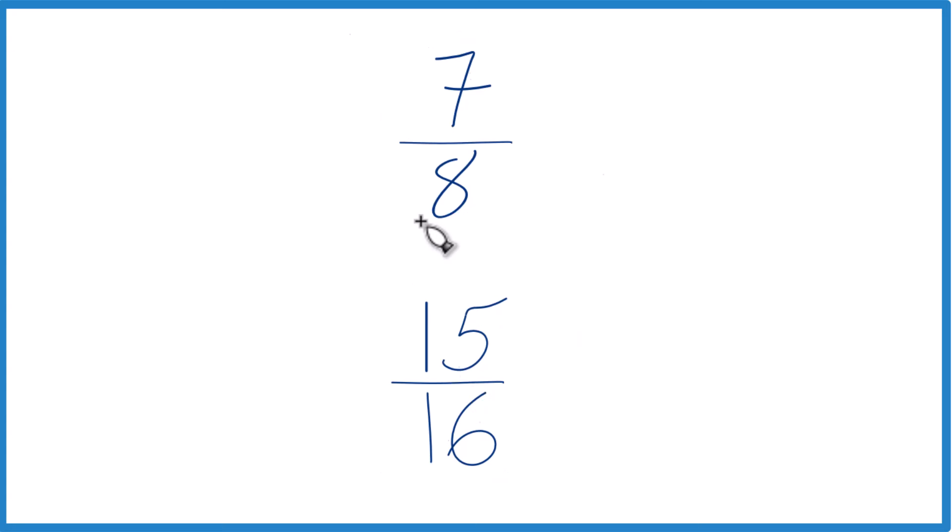You could try to reason this out, or you could use a calculator. 7 divided by 8 would give you a decimal, 15 divided by 16 gives you a decimal, you could compare them, see which is larger, 7/8 or 15/16.